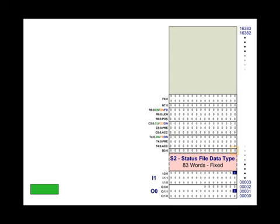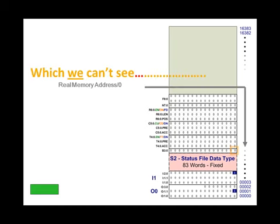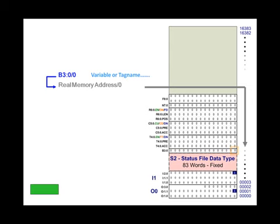Let's pick a single bit — B3:0/0 from the variable B3:0 — and look closely at the nomenclature. We cannot see the real memory location or the real memory ID; it's numerical, probably in hex code. We use a variable pointer, operand, or tag name — also referred to as an alias. This is an alias for the real memory address. Since we never see the real memory address, we'll stick to 'variable tag name pointer operand,' because later on we will create an alias for the variable or tag name.